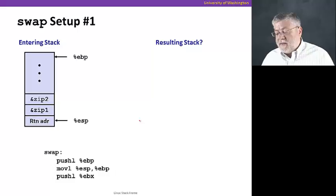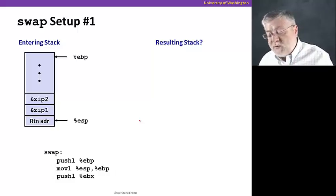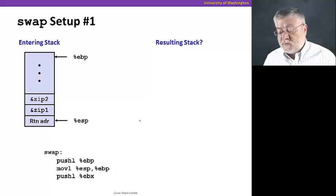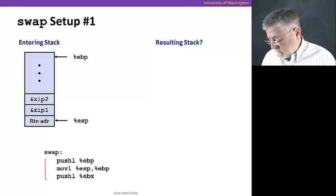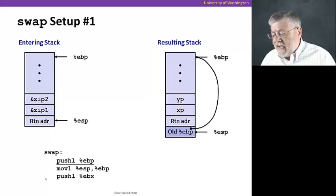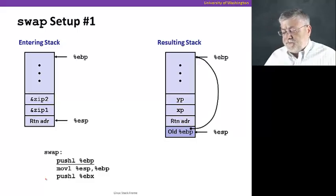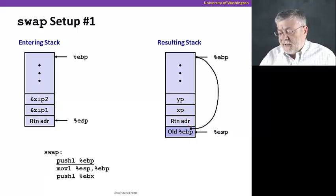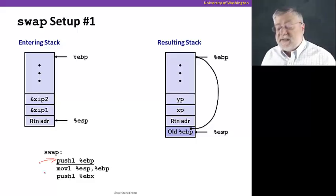Let's start with that stack as it was when we started executing the swap procedure. So, here's the first few instructions of swap, that setup code. What happens after these instructions execute, the first three instructions? So, the stack starts off with having a new value added to it. You'll notice here we have a push of the register EBP onto the stack.